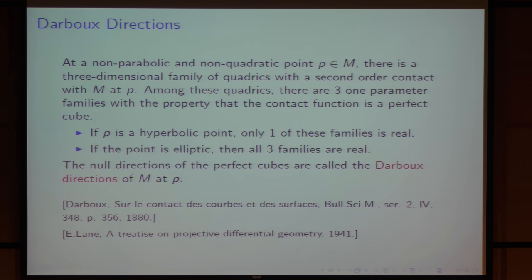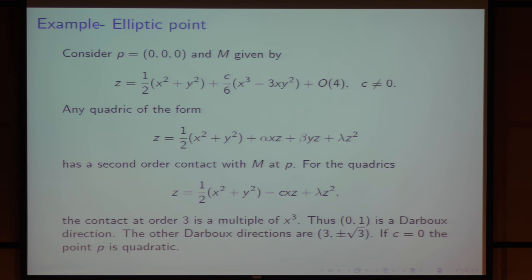There is a reference for this work of Darboux — a book from 1880 that I found cited in a book by Lane. Just to see how it works at an elliptic point: there is a normal form close to a non-umbilic elliptic point written in a certain way.